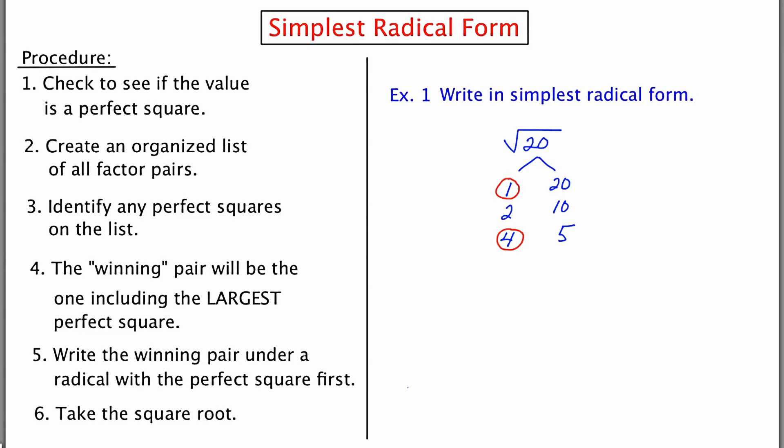The next step is to identify which pair is the winning pair. And if we look at step number 4 in the procedure, it says that the winning pair will be the one that includes the largest perfect square. So the winning pair in this case is going to be 4 times 5. In step 5, it says write the winning pair under a radical with the perfect square written first. And in step 6, it says take the appropriate square root.